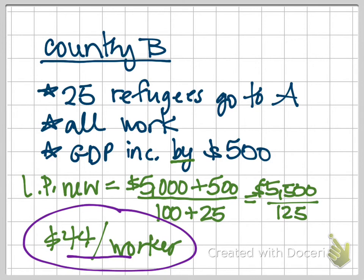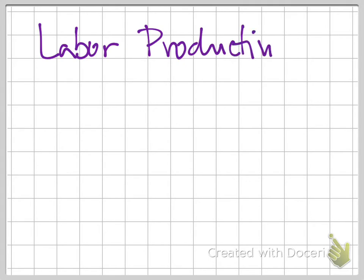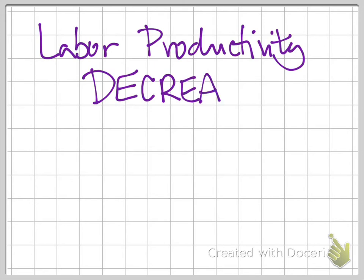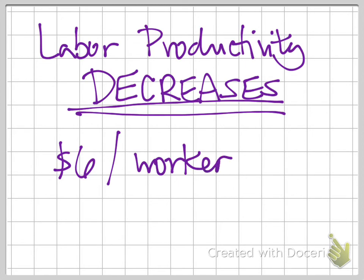So what does this mean? This means that in this example, even though total GDP went up, labor productivity actually decreased. This was because those 25 new refugee workers that came in were not as productive as our original workers. The question might also ask how much was the change — and the change here was a decrease of $6 per worker. That's just a quick example to show you more about labor productivity. Thank you.